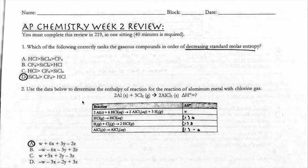I'm going to go through week two review. It says which of the following correctly ranks the gaseous compounds in order of decreasing standard molar entropy. Remember, if you're comparing compounds and trying to decide which one has more entropy, the larger the compound, the better able it is to have disorder. So the larger the compound, the more disorderly it can be. Therefore, the greater the molar entropy will be.